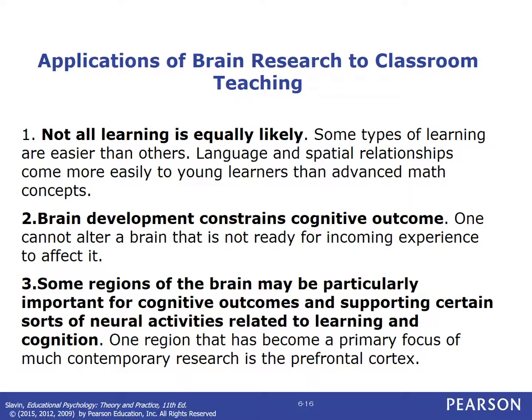A second application is that brain development constrains cognitive outcomes. You cannot cause something to happen before the brain is ready for it. Applying that to math facts, for example, you can't teach math facts to most two-year-olds because the brain physically is just not ready to handle that information.